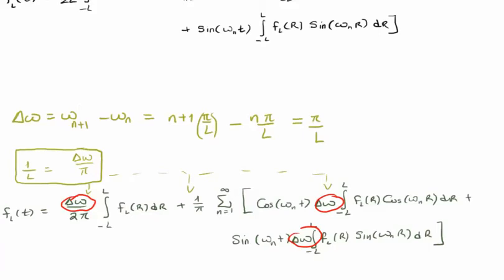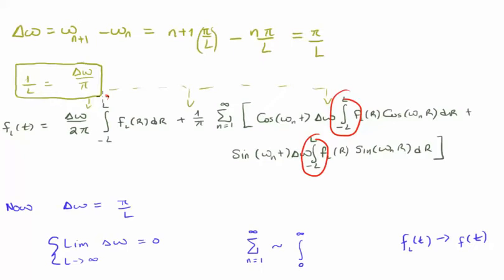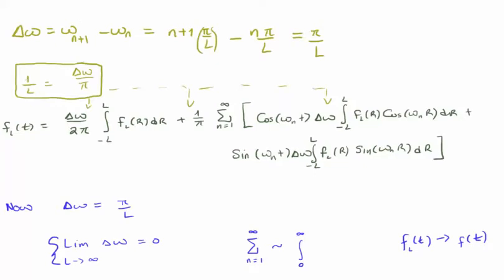Just like the derivation of integrals from Riemann sums, we take the limit as delta omega goes to zero, which happens as l goes to infinity. In this limit, the summation is approximated by an integral with a lower limit of zero. The periodic function f sub l of t becomes the aperiodic function f of t, and the limits in the inner integrals become minus to positive infinity — in contrast to the outer integral which runs from zero to infinity.